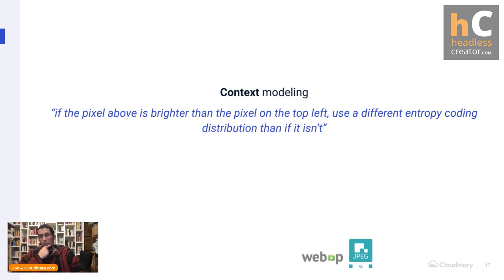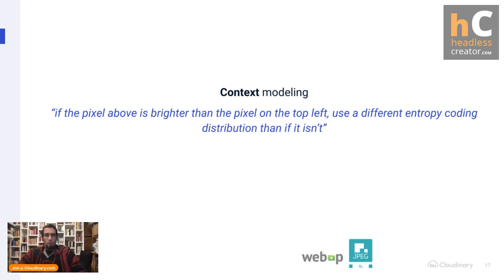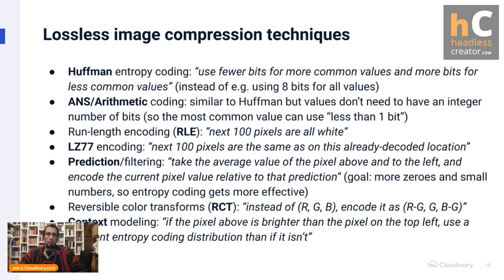A more advanced technique is context modeling, where the entropy coding distribution of symbols depends on the context — the neighboring pixels and their properties. You can use a different type of entropy coding in busy regions of the image compared to smooth regions. There's more to lossless compression than this, but those are some of the key techniques that give you an idea of the kinds of things that are done.